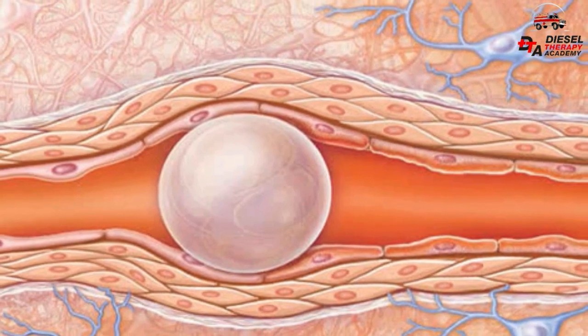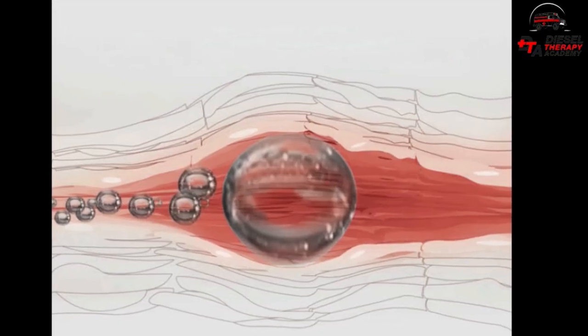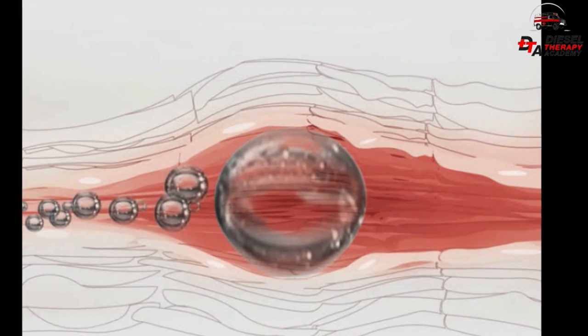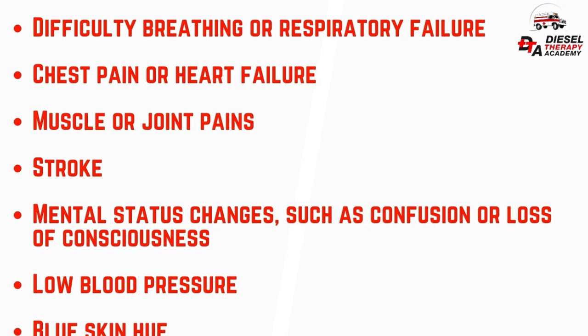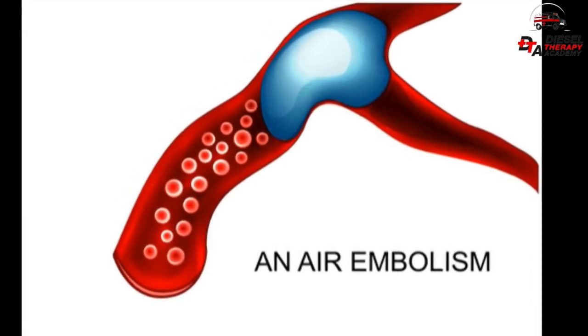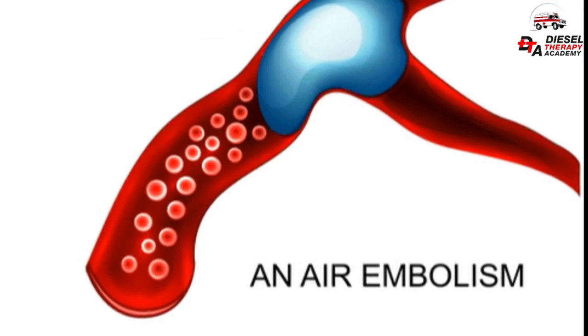Air emboli occur when the solution container runs empty and the added container pushes air down the line into the patient. Air emboli can develop within 10 to 20 minutes or sometimes longer after surfacing. Signs of air emboli include difficulty breathing or respiratory failure, chest pain or heart failure, muscle or joint pains, stroke, mental status changes such as confusion or loss of consciousness, low blood pressure, and blue skin hue. Air emboli can occur with the insertion or removal of intravenous catheters, though few cases of air embolism have been reported from intravenous access alone.